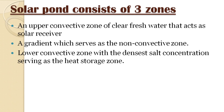The upper convective zone acts as the solar receiver. The non-convective zone is the salinity gradient zone. The lower convective zone contains the densest salt concentration and serves as the heat storage zone. These are the three zones in a solar pond.